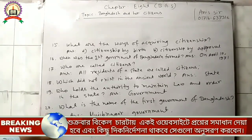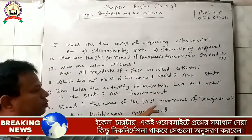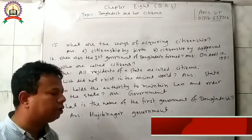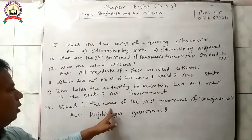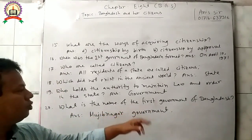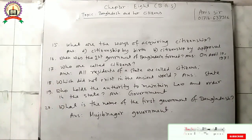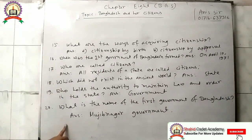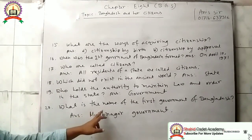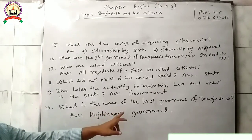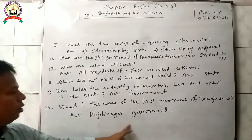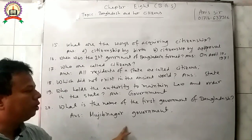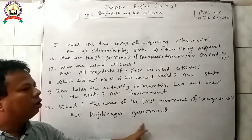Question 20: What is the name of the first government of Bangladesh? Answer: The name of the first government of Bangladesh is Mujibnagar Government.